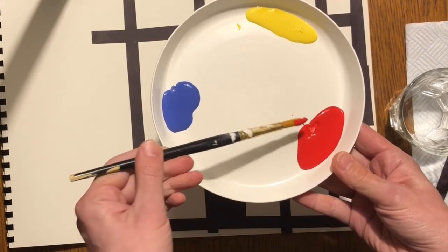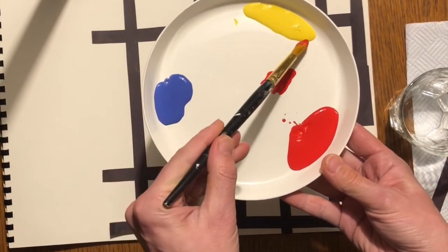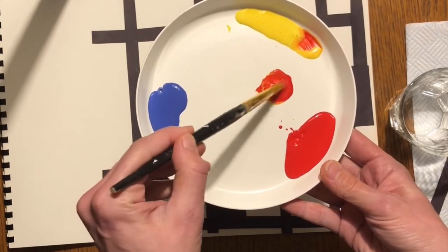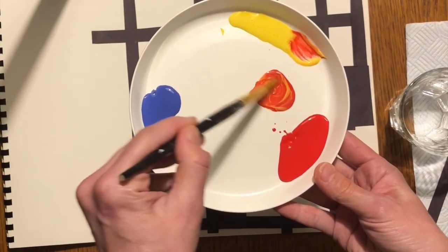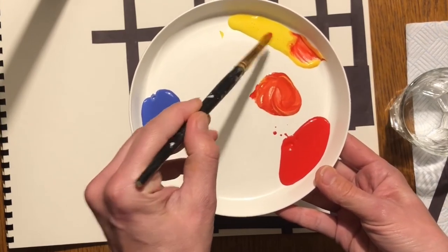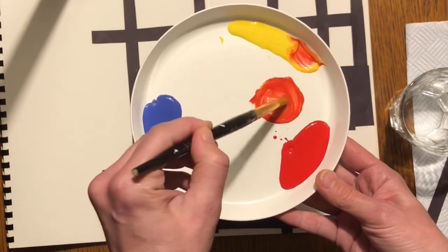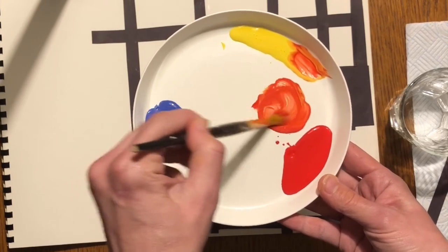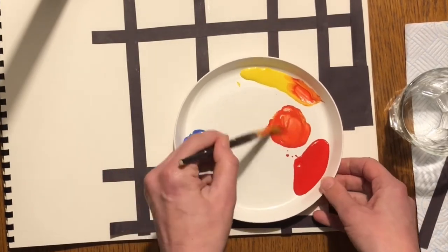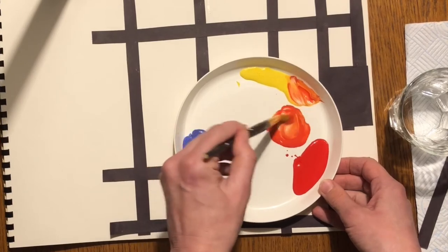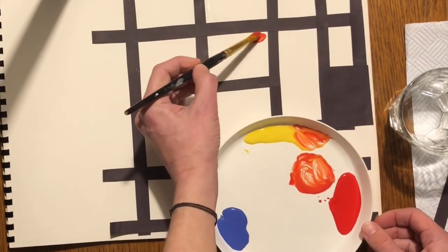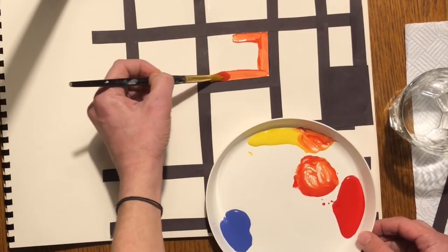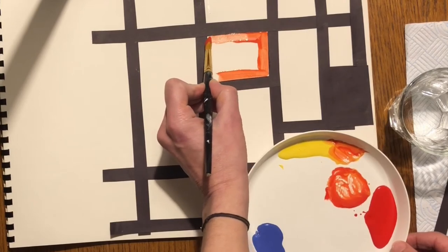Dip your brush to get a little bit of red. Take some yellow from the edge and mix together. Don't put your red brush right into the middle of the yellow, otherwise all of your yellow will get red and you won't be able to use it again. Now I've made orange. Decide where you want to put your orange. Try not to paint on your black line.